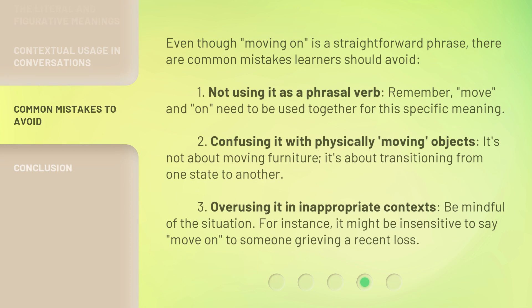Even though 'moving on' is a straightforward phrase, there are common mistakes learners should avoid. 1. Not using it as a phrasal verb — remember, 'move' and 'on' need to be used together for this specific meaning. 2. Confusing it with physically moving objects — it's not about moving furniture; it's about transitioning from one state to another. 3. Overusing it in inappropriate contexts — be mindful of the situation. For instance, it might be insensitive to say 'move on' to someone grieving a recent loss.